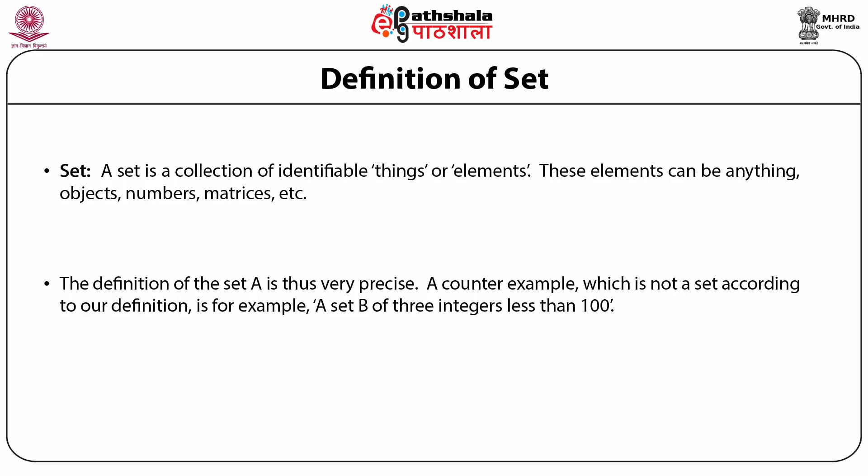A counter-example which is not a set according to our definition is, for example, a collection which consists of only 3 integers less than 100. These 3 integers could be 1, 2, 3 or 11, 12, 13, but which ones are not specified. Thus, if someone asks you if the integer 19 is part of the set or not, it is not certain whether it belongs to the set or not. Thus, this is not a set.